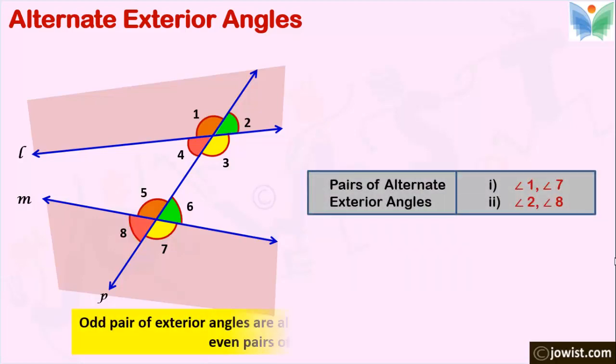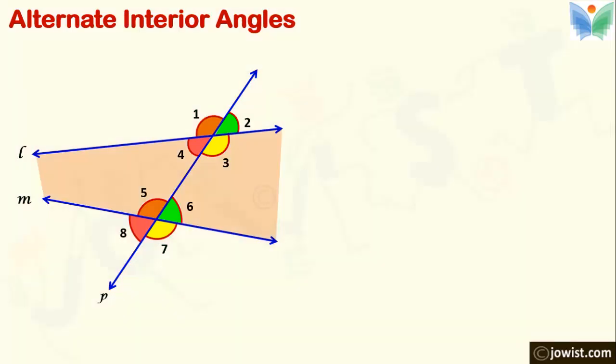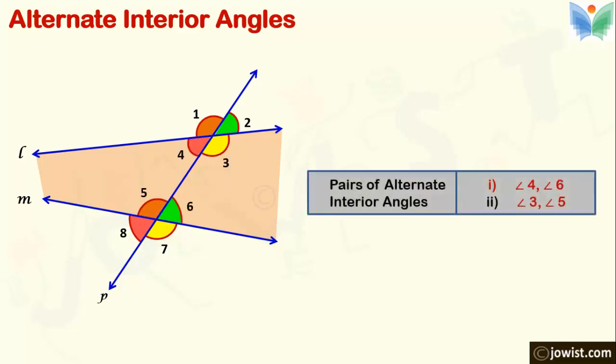Here you just have to remember that odd pair and even pair will make alternate exterior angles. Now let's find the alternate interior angles. We have identified the interior part of the region. Even pairs 4 and 6 and odd pairs 3 and 5 are alternate interior angles.